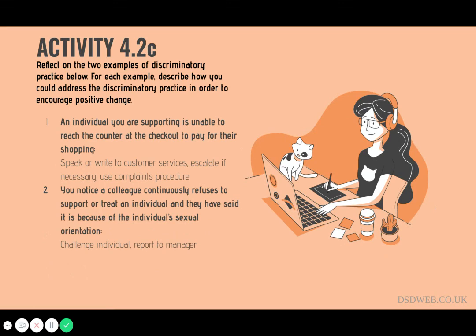Activity 4.2c asks you to look at a couple of scenarios and explain how you may address the discrimination to encourage positive change. The first scenario involves an individual unable to reach a counter to pay for their shopping. You may speak to the person on the counter or their manager to discuss a solution, or escalate to head office following their complaints procedure, reminding them of their obligations under the Equality Act 2010. The second scenario involves a colleague who refuses to work with an individual because of their sexual orientation. You may challenge them yourself or report it to your manager. They may need it explained why this is discriminatory or may need additional training. If discrimination continues, it may need to be addressed through disciplinary action.